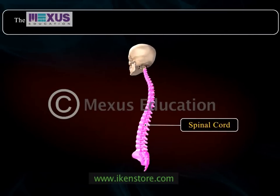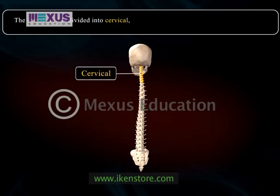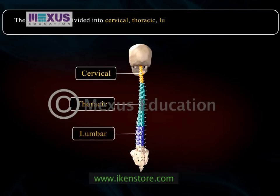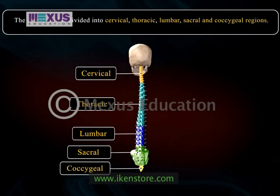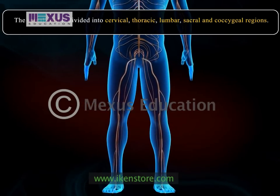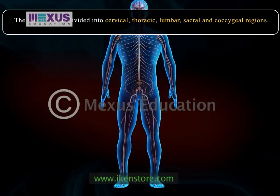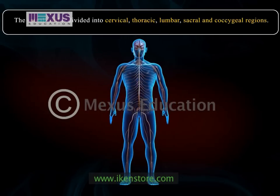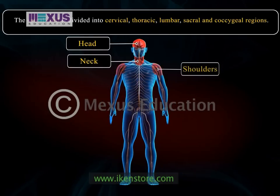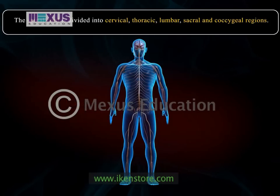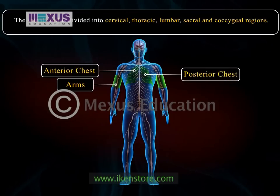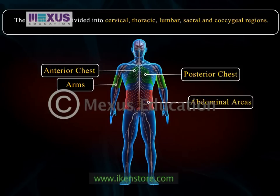The spinal cord is divided into cervical, thoracic, lumbar, sacral, and coccygeal regions. Eight cervical segments transmit signals from or to the areas of the head, neck, shoulders, arms, and hands. Twelve thoracic segments transmit signals from or to part of the arms and the anterior and posterior chest and abdominal areas.